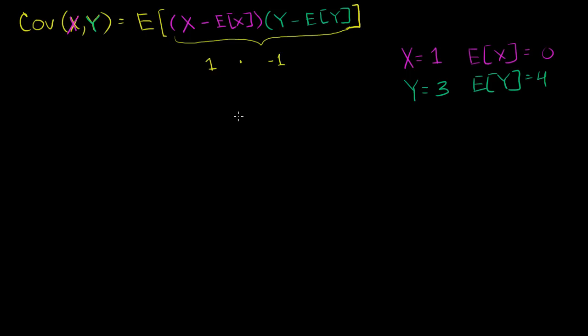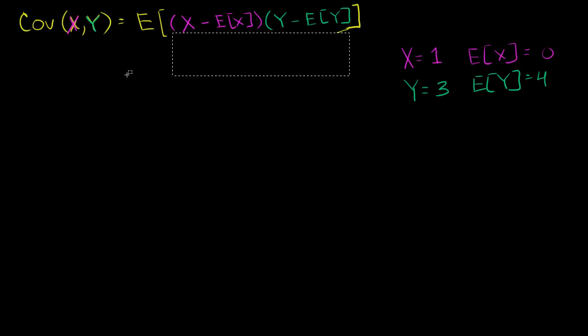Hopefully that gives you a little intuition about what covariance is trying to tell us. The more important thing I want to do in this video is connect this formula — this definition of covariance — to everything we've been doing with least squared regression. I really do think covariance is motivated to a large degree by where it shows up in regressions.